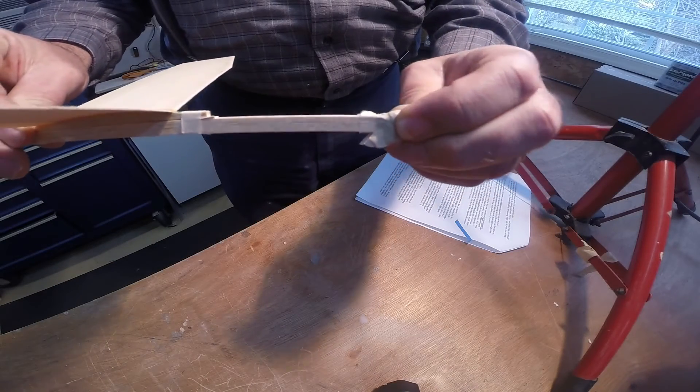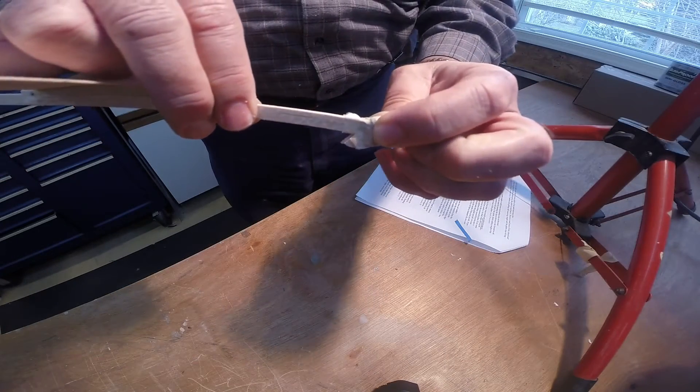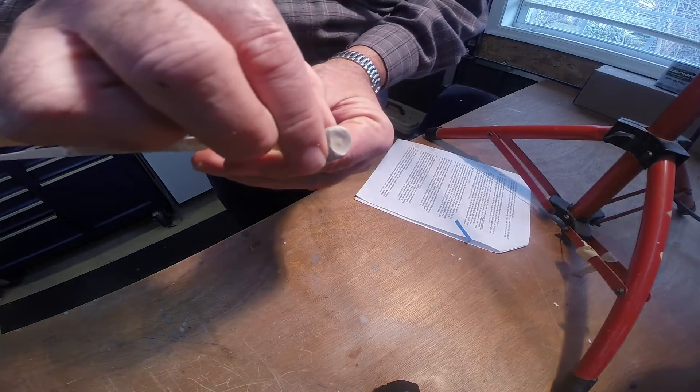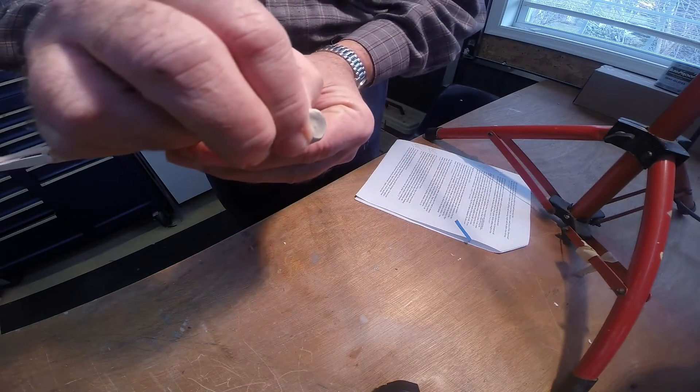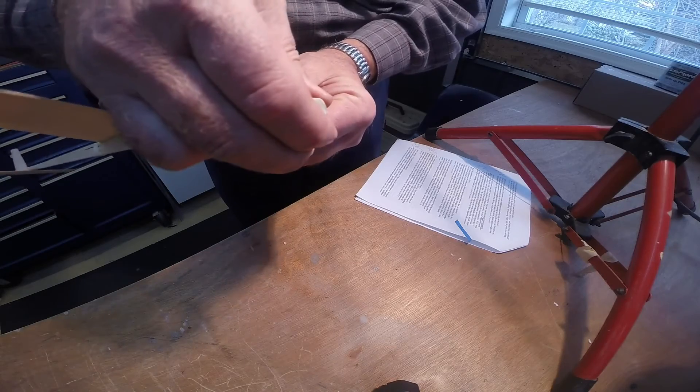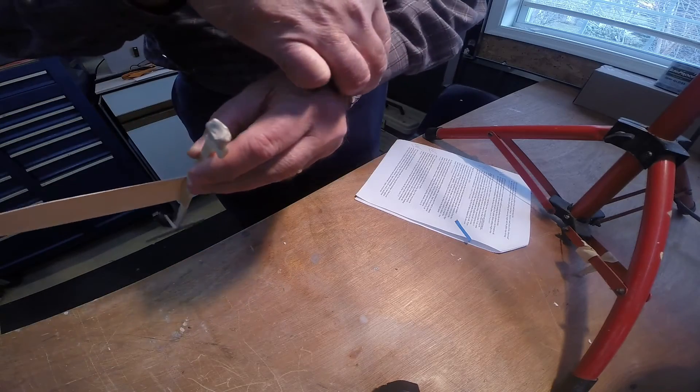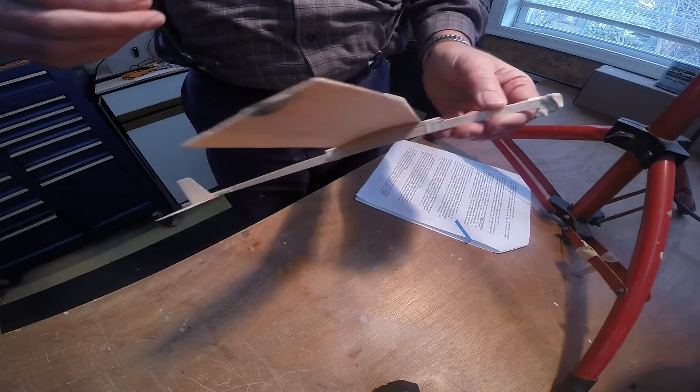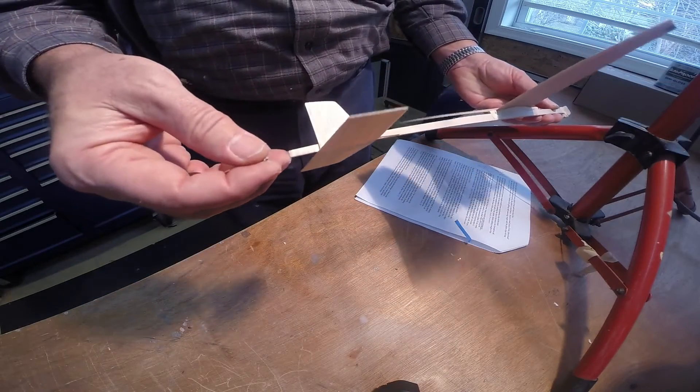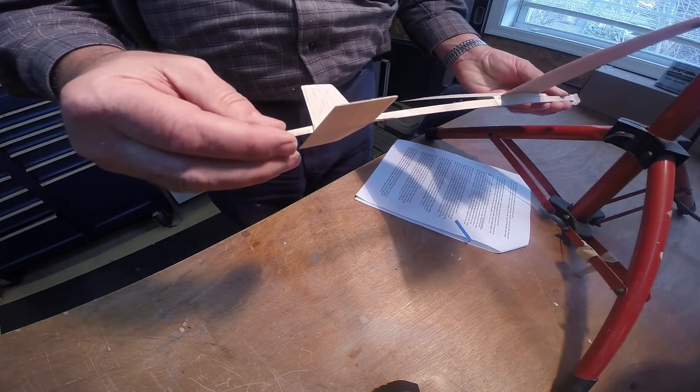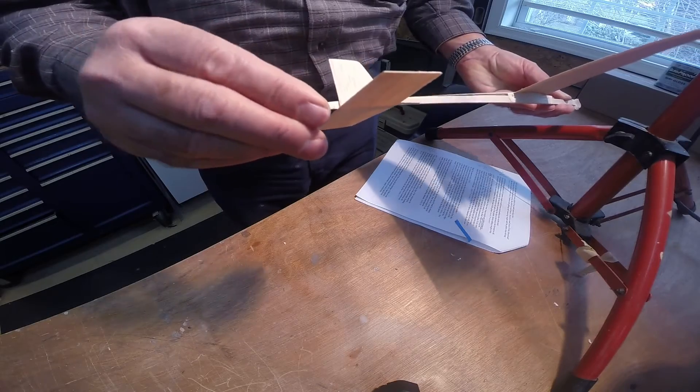Fine adjustments to the center of gravity can be made by pushing the clay on the nose a bit forward or aft. In extremely rare occasions, weight might be needed on the tail of the glider. Before adding weight to the tail, verify the wing is the correct distance from the nose of the glider.